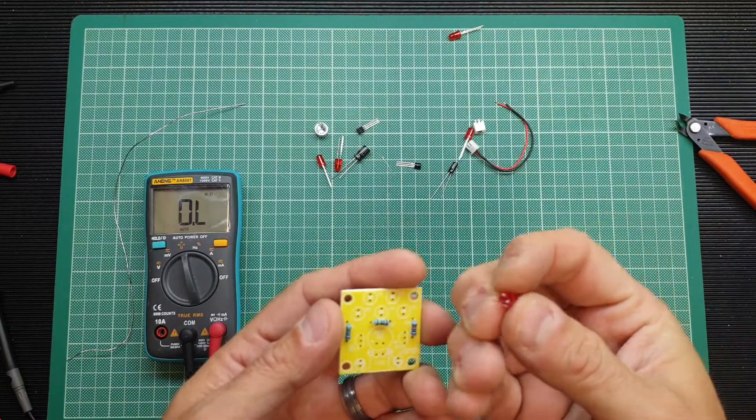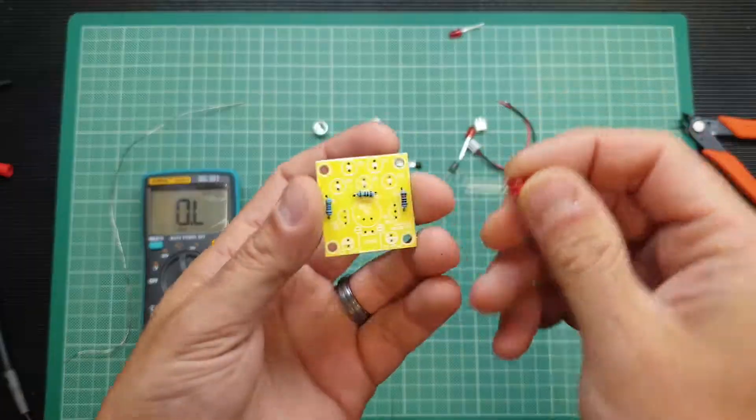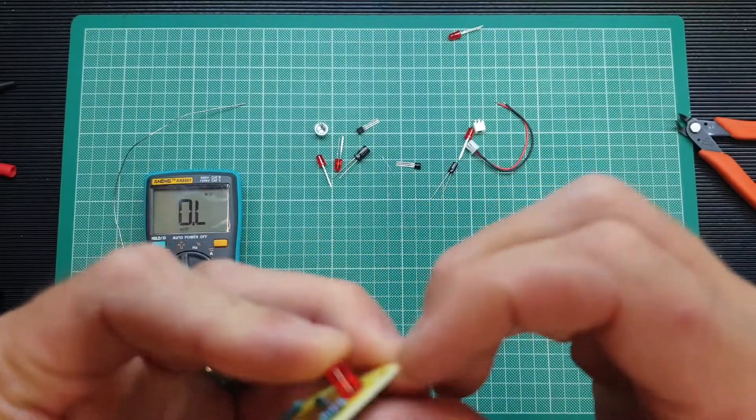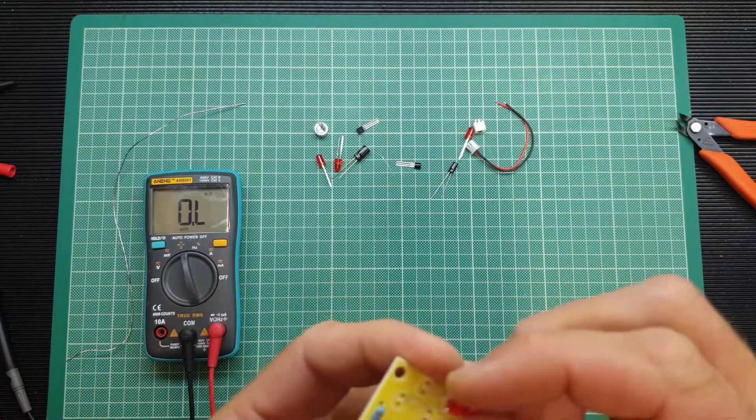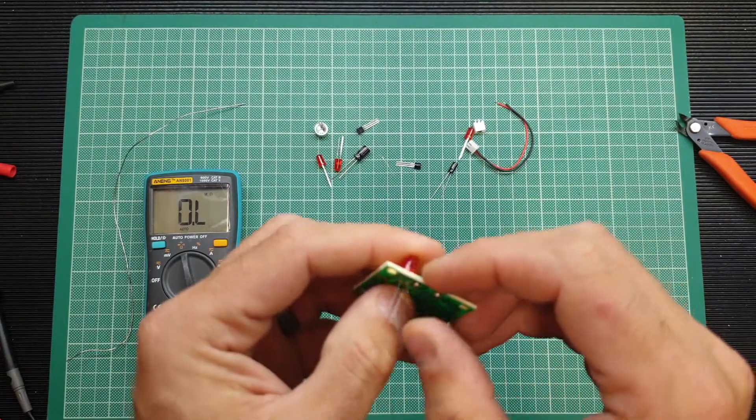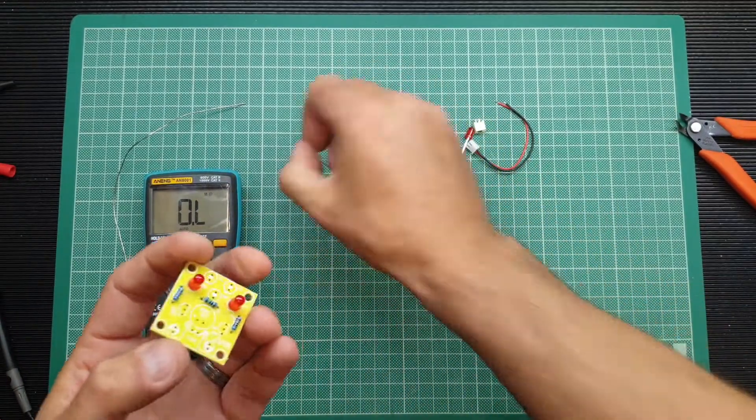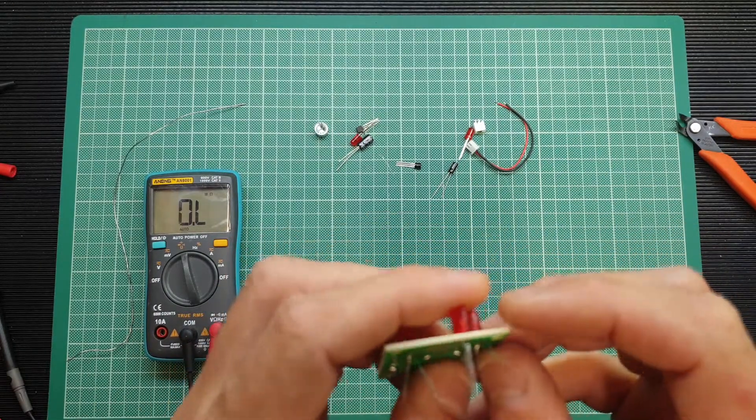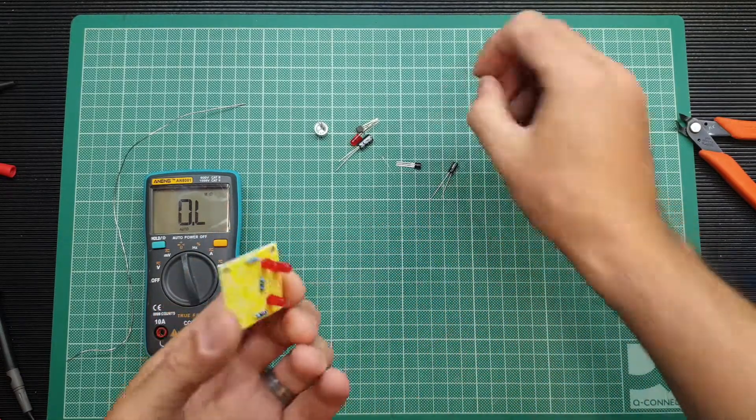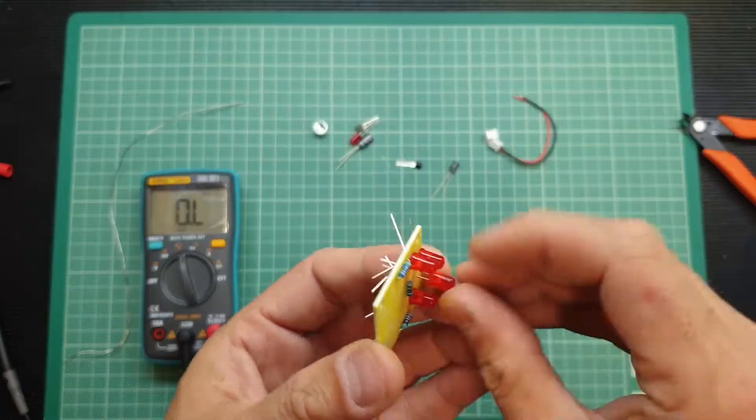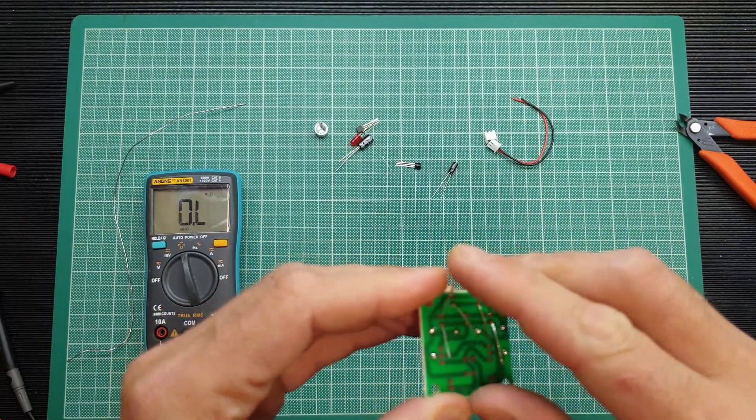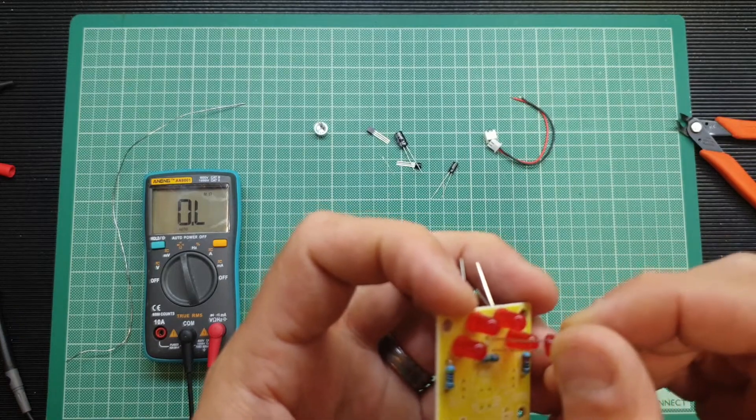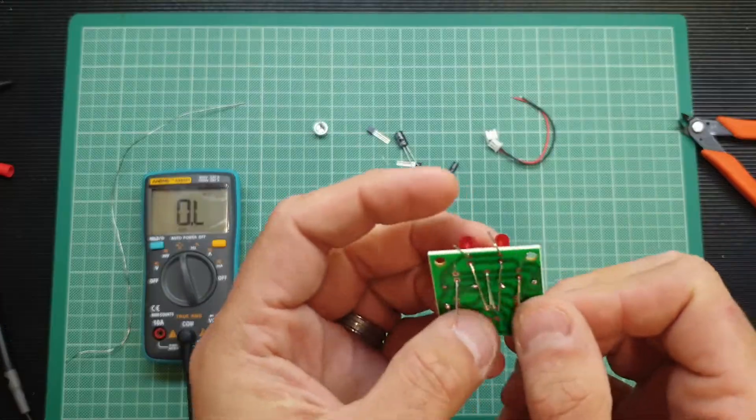Next I think we'll do the LEDs. The cathode's got the flat edge and the flat edge is marked on here, so just pop these in like so. Just bend the leads out slightly. I've got some royalty free music queued up - not my style of music, but I thought it would be suitable for testing this. Nearly there.